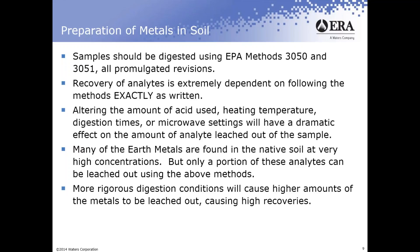The more rigorous the digestion, the more analyte you'll get out — more nitric acid, more HCl, hotter temperature, or longer digestion time. However, you're not doing the method as written. I get calls from people who fail by getting really high values and say 'I'm doing a better digestion' — but you're doing a more rigorous digestion. If you're pulling out more metals, when you run regular field samples you may be over-reporting the amount of analyte in the soil and potentially reporting something above a regulatory limit that may not actually be there.